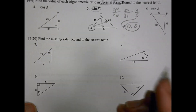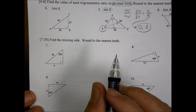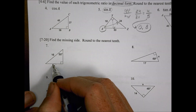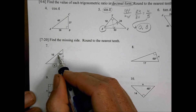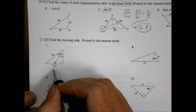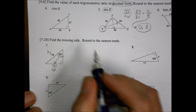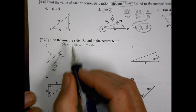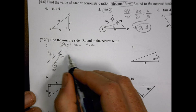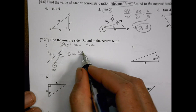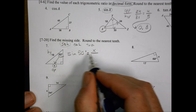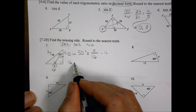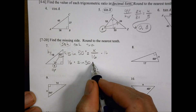Find the missing side and round to the nearest tenth. We'll use a calculator — or a trig table if your teacher asked for that. We have one angle measurement, we're looking for the opposite side, and we have the hypotenuse. Using SOH-CAH-TOA, opposite and hypotenuse means we use sine. So: sine of 50 degrees equals x (opposite) over 16 (hypotenuse). Multiplying both sides by 16 gives us 16 times sine of 50 equals x.